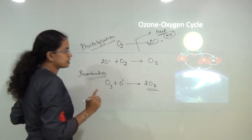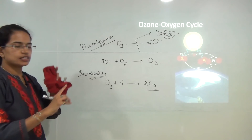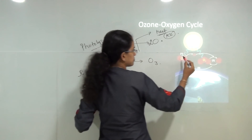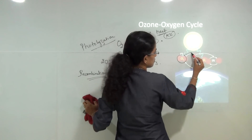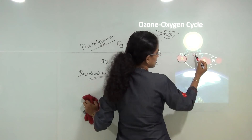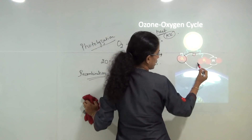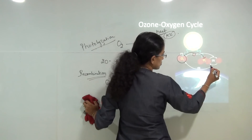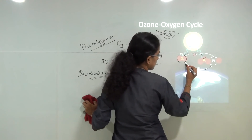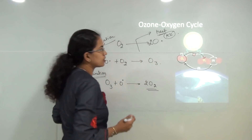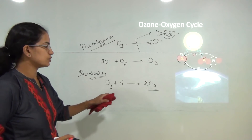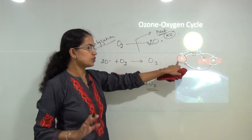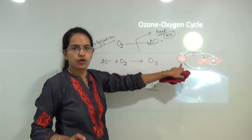So it is a kind of continuous process in the atmosphere, where oxygen reacts with ozone radicals to form ozone, and this ozone again by the process of recombination breaks down into two molecules of oxygen.